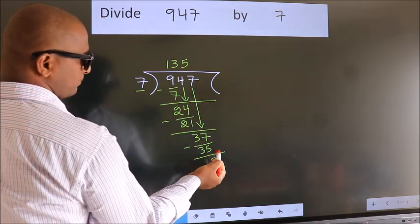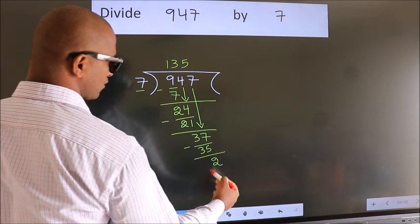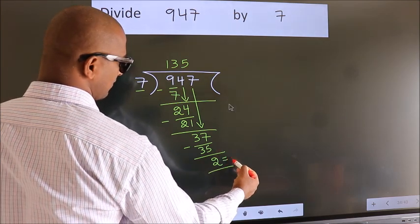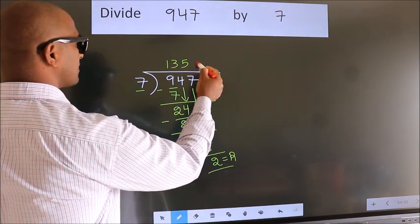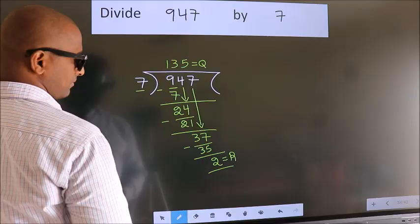No more numbers to bring down. So we stop here. This is our remainder. This is our quotient.